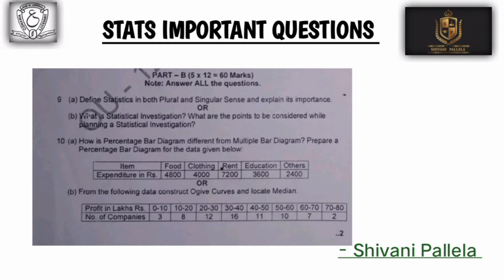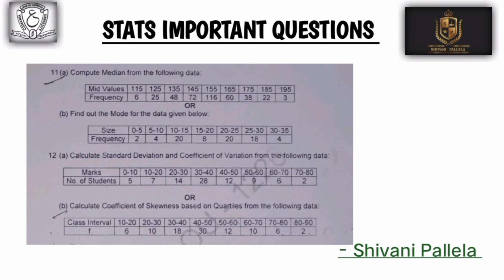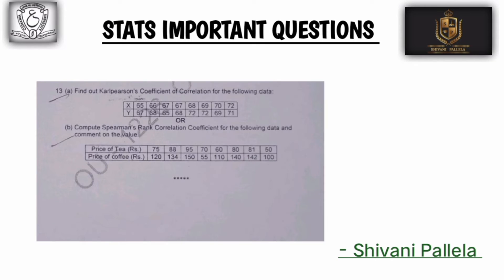In Part B, we have question number 9, A and B, from the first unit. Each unit has 2 questions with internal choices. In the first unit we have theory questions. Overall in Part B, you have 5 questions with 10 internal choices total. That is the structure of this model paper.